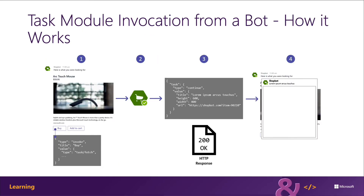To create the message, set the button's type to invoke. The value type property of the button should be set to task/fetch, or action.submit if you're using an adaptive card. When the user selects the button, it will send an HTTP post invoke message to the bot, and the Microsoft Teams SDK automatically processes all of the invoke messages and directs them to one of two handlers.